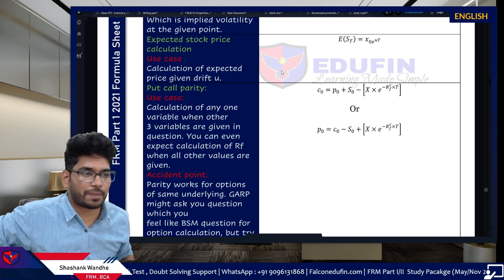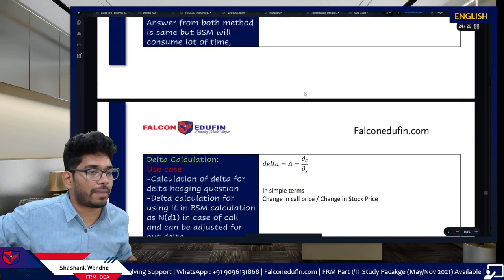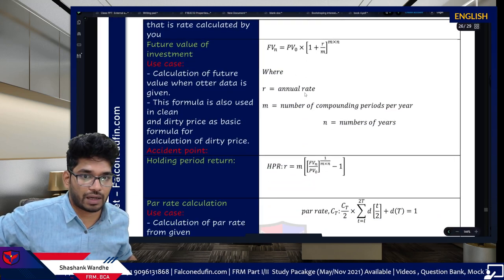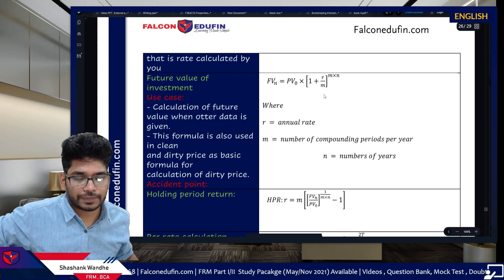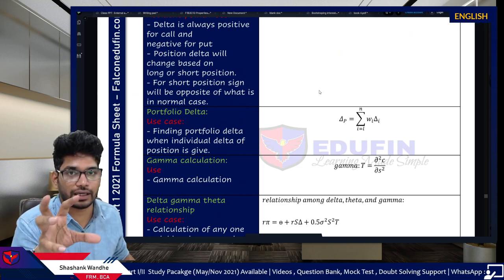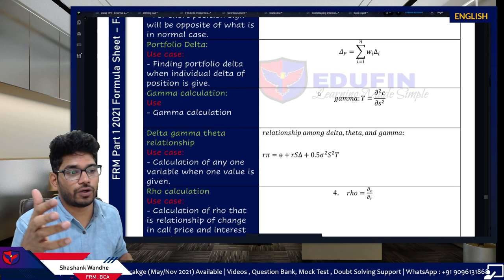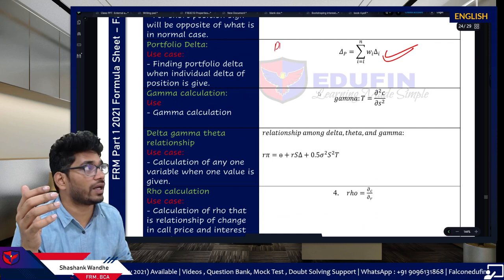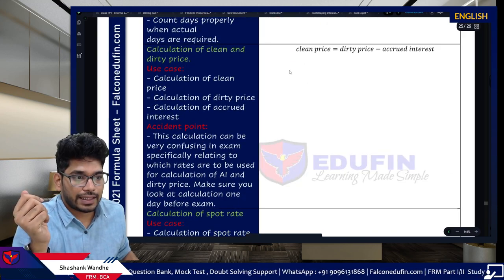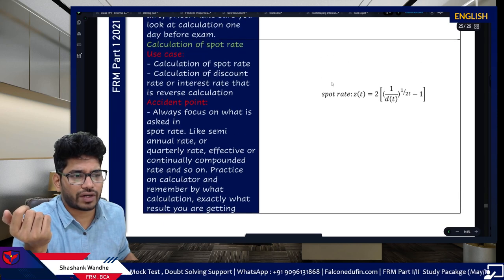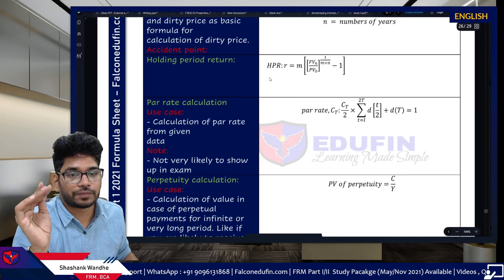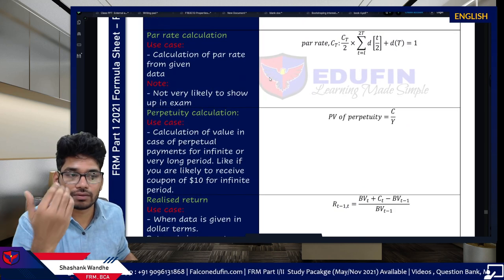Expected stock price is basic and not testable. Put-call parity applies in the BSM context. Delta, gamma, and vega are generally not testable as calculations — GARP will provide their values and ask you to use them. Greeks questions are more likely to be theory-based. Portfolio delta can be asked: if deltas of individual assets are provided, sum them (weighted) to get the portfolio delta.